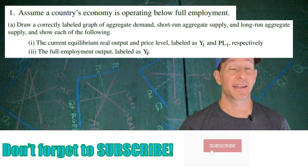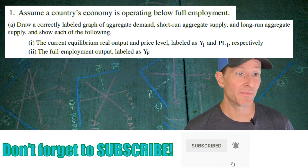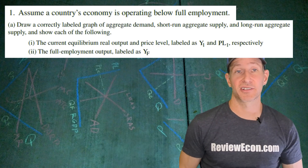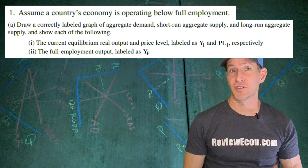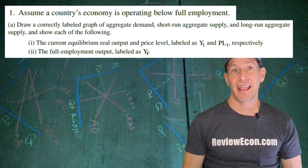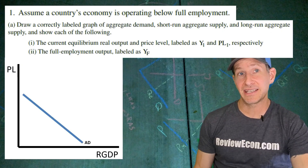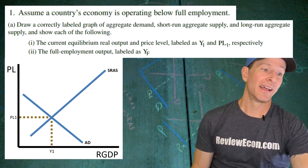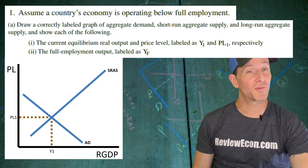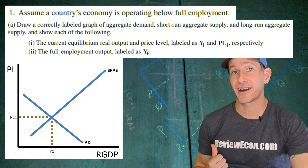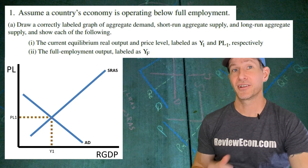This question starts off with a country that is currently operating below full employment. We're going to draw an AS/AD model graph showing the long-run and short-run aggregate supply curves and the aggregate demand curve. We'll label the axes PL and RGDP, with a downward sloping aggregate demand curve and an upward sloping short-run aggregate supply curve. Between those, we label the current real output Y1 and the current price level PL1. If you have that, you get your first point.